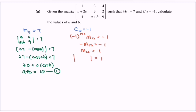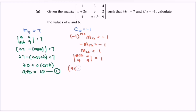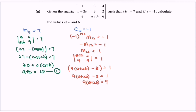So for the minor M12, close up row 1 and column 2. Then we have A plus 2B, and 2, 4, and 9. So we get 9 times bracket A plus 2B, minus 8, equals to 1. So 9 times bracket A plus 2B equals to 9, therefore A plus 2B equals to 1. That is the second equation.